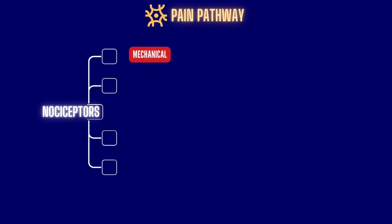Mechanical nociceptors detect the distention of skin, stretch, and pressure, which elicit sharp, pricking pain. Chemical nociceptors detect exogenous and endogenous chemical agents, such as prostanoids, histamines, etc.